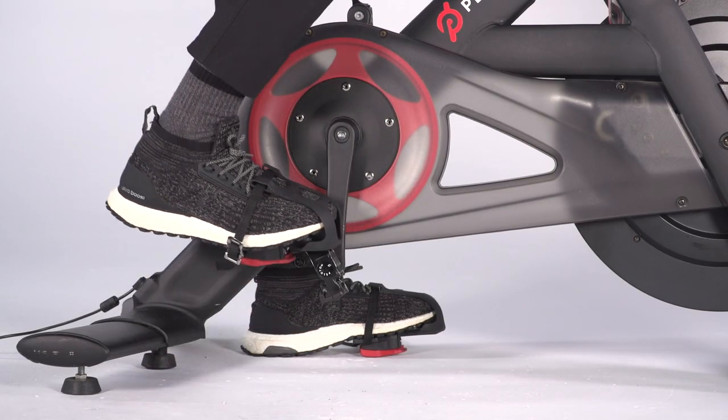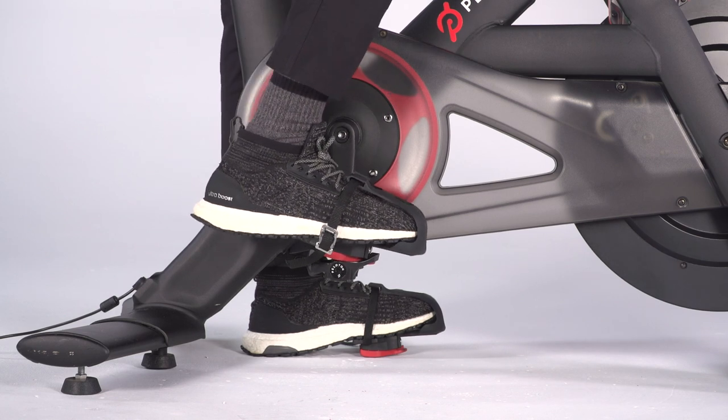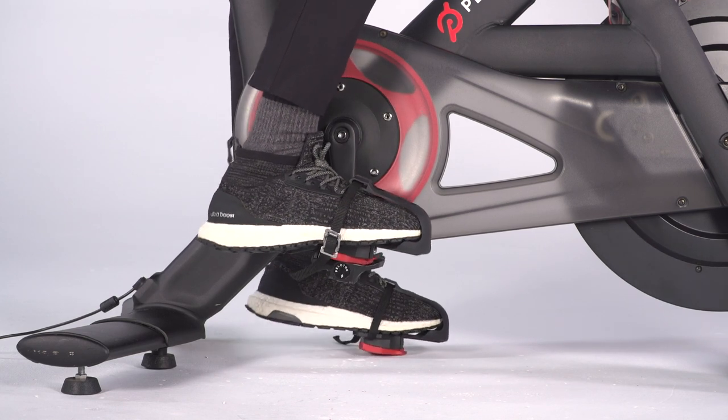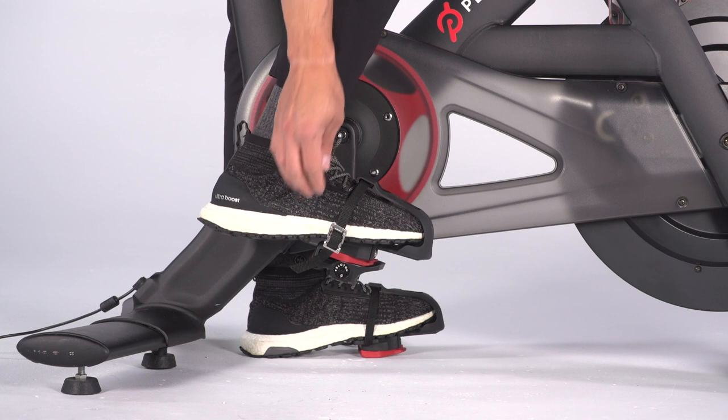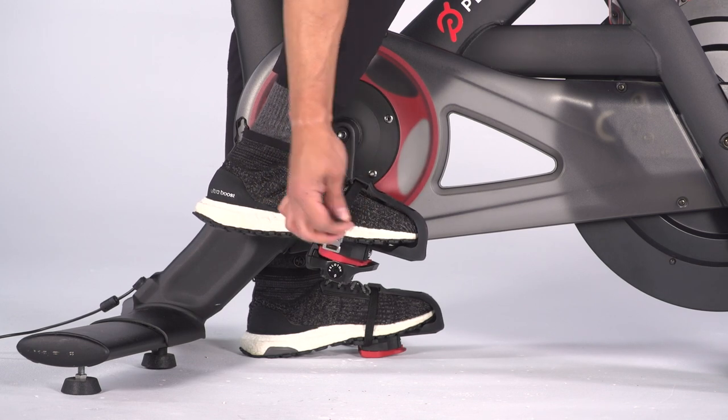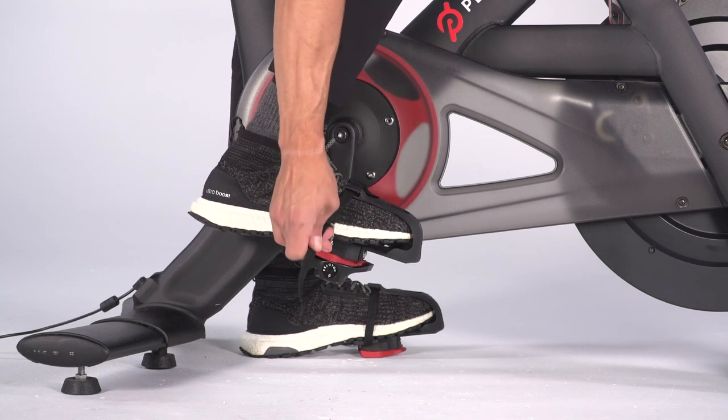Clip into the bike pedals the way you would with cycling shoes. Fit the cleat into the pedal and push down through your heel. Pull the strap to tighten it and thread the strap through the other side of the buckle.